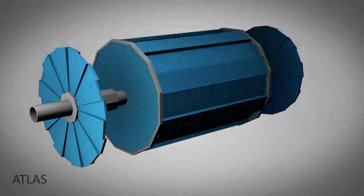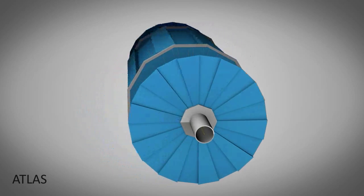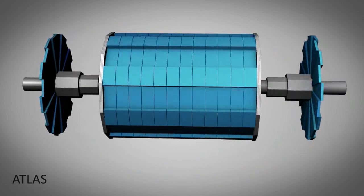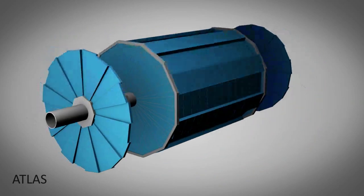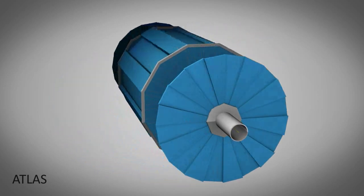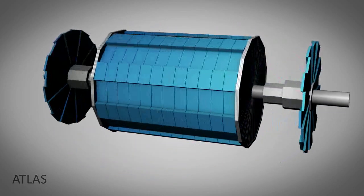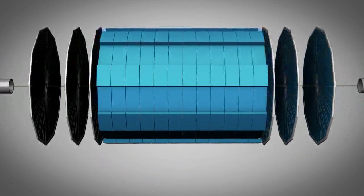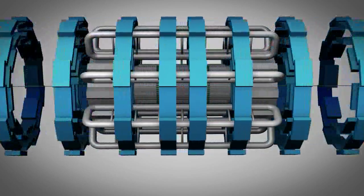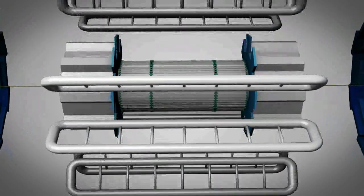The Atlas Detector is our tool for detecting the Higgs. It is situated at CERN in Geneva, Switzerland, and will be used to detect the high energy collisions produced by the Large Hadron Collider. It measures 44 meters long, 25 meters in diameter, and weighs in at 7,000 tons.